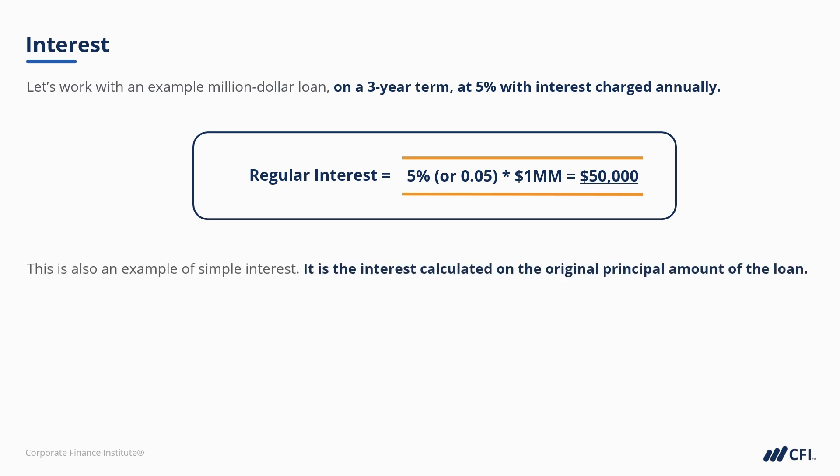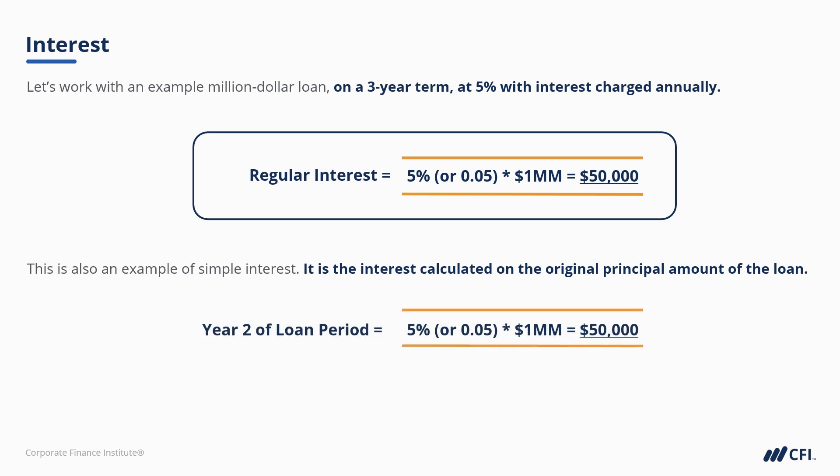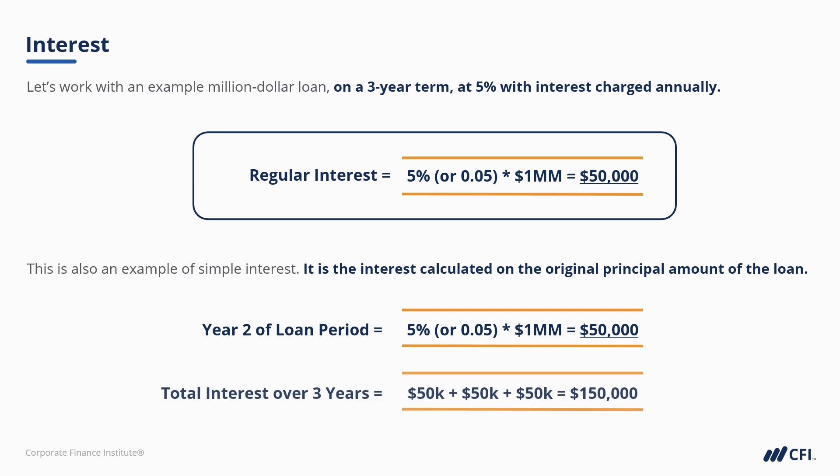That's also an example of simple interest. Simple interest is best explained as interest calculated on the original principal amount of the loan. At the end of year 2, this borrower making regular interest payments would owe another $50,000 in cash interest expense — same at the end of year 3. Simple interest is additive. The cumulative amount of interest paid after year 3 of this loan term is $150,000: 50 plus 50 plus 50.